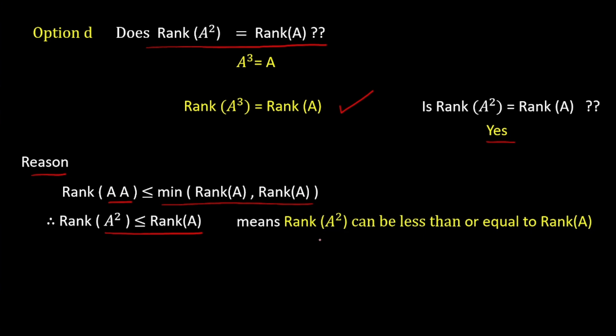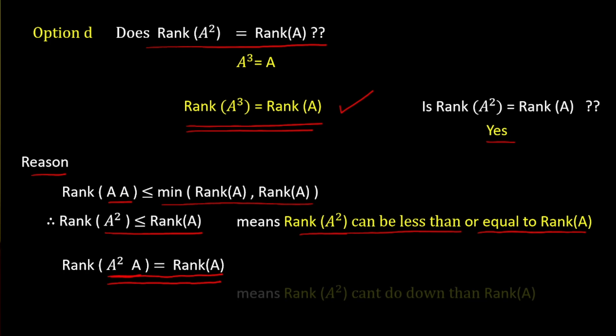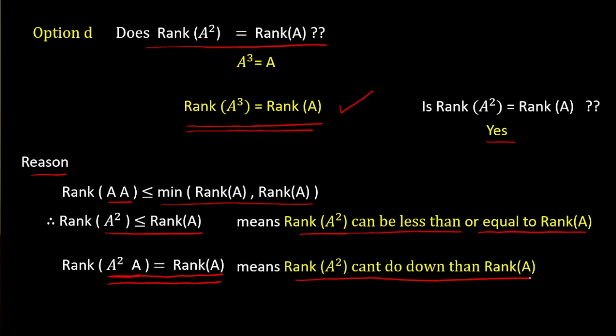And so A squared, the rank of A squared is not bigger than the rank of A, but then if we multiply again to get A cubed, that's the same as our original A. So that's telling us that the rank can't go down, because we're getting back to the same matrix. So A and A squared do have the same rank.